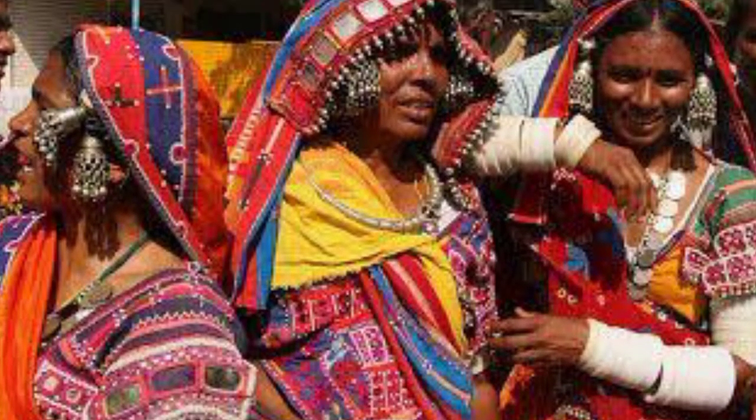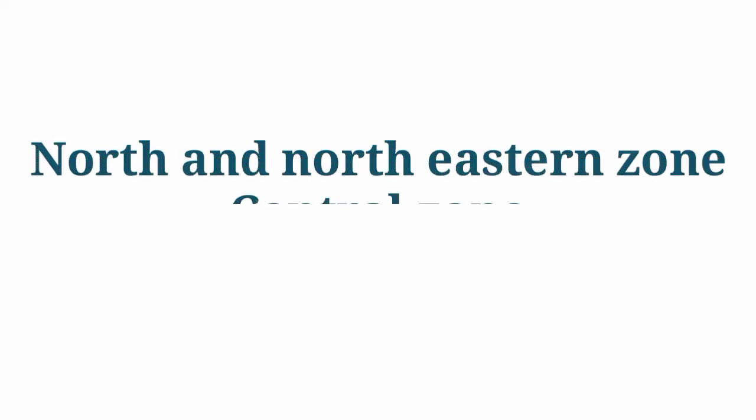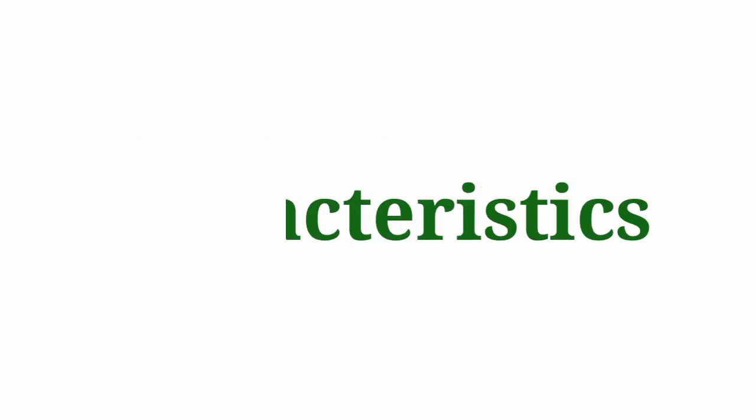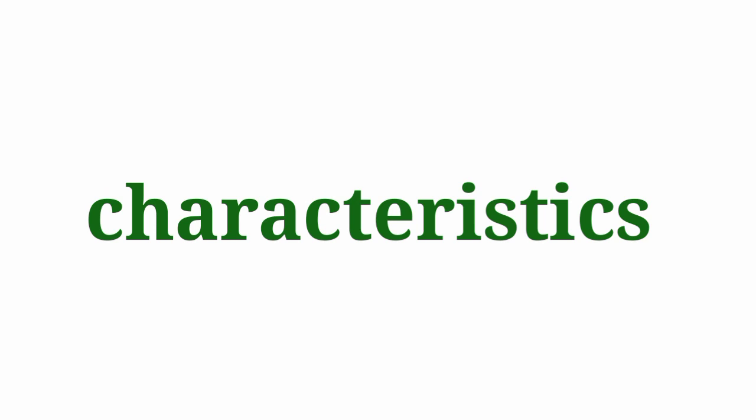These three tribal peoples are again subdivided into many groups. Now let us look at the three important geographical zones where tribes live in India. The first is the north and northeastern zone, the second is the central zone, and the third is the southern zone.